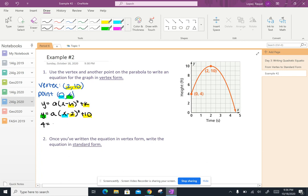So I've got 4 equals a, 0 minus 2 squared plus 10.